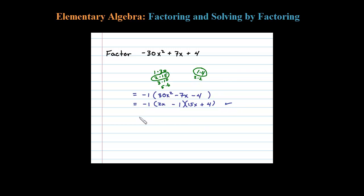That's acceptable, but in the back of the book you might see that negative redistributed, so we might see (−2x + 1)(15x + 4). Either way you should get it right.